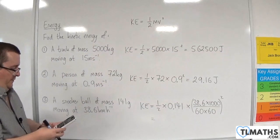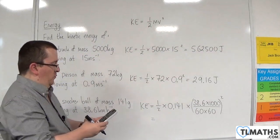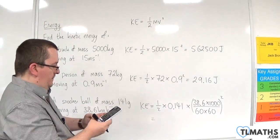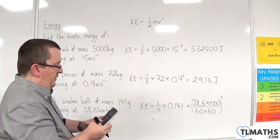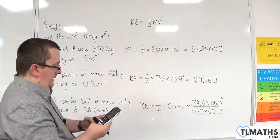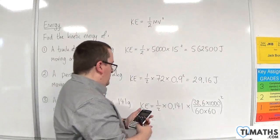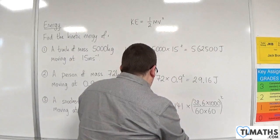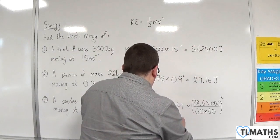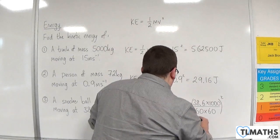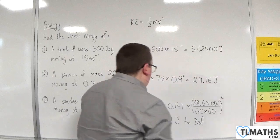So we have one-half times 0.141 times, opening a bracket, 38.6 times 1,000 over 60 times 60, and that's squared. We're getting 8.11 joules to three significant figures.